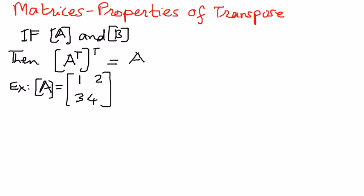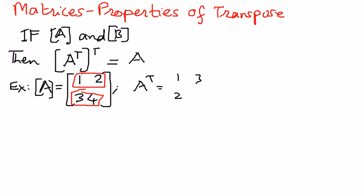What this property is telling us is: if we take matrix A and transpose it, we write the rows as columns. Therefore, the transpose of A is 1, 3, 2, 4.